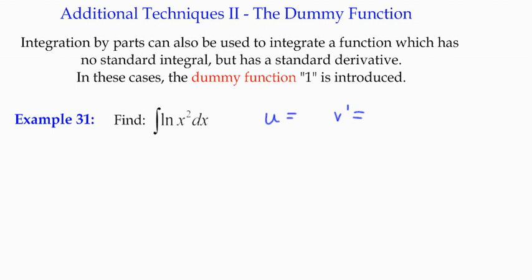In this case, example 31, the natural log of x squared is our function that we're trying to integrate. So what we do is we introduce what we call a dummy function and it's as simple as introducing a multiplier of one.